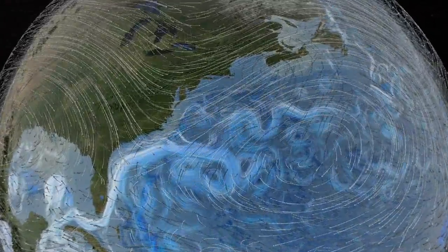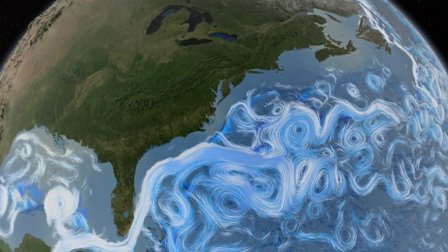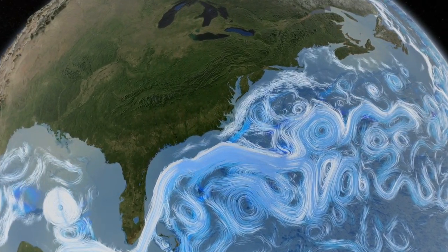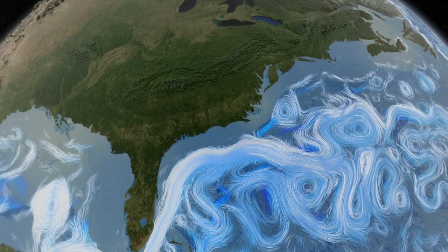Wind currents drive surface ocean currents. This computer simulation shows the Gulf Stream winding its way along the coast of North America.